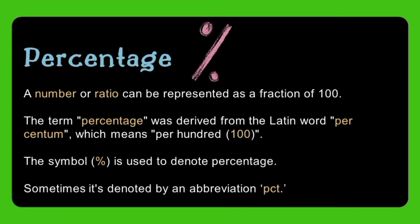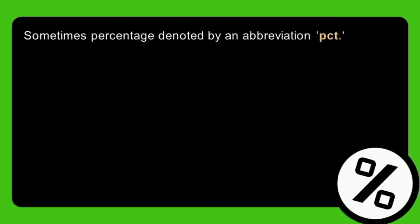Percentage is a number or ratio that can be represented as a fraction of 100. The term percentage was derived from the Latin word 'percentum,' which means 'per hundred.' The symbol % is used to denote the percentage, but sometimes it's denoted by the abbreviation 'pct.'